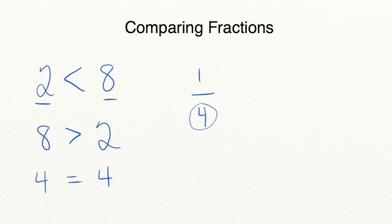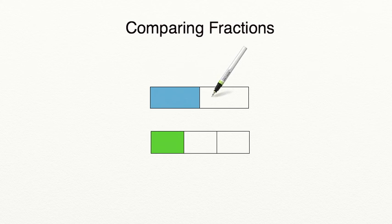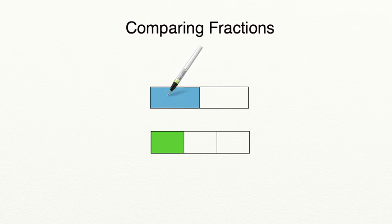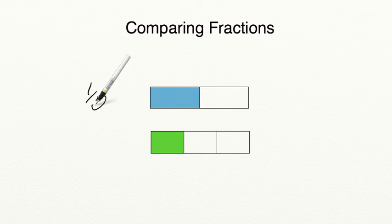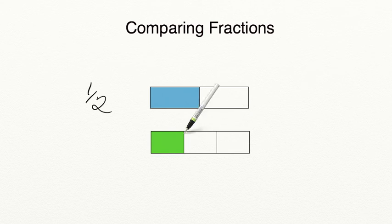Let's start comparing. We'll begin comparing fractions using the two fraction bars on the screen. Our first fraction has two pieces in the whole — that's our denominator — and one of those two pieces is shaded in, giving us a fraction of one-half. Our second fraction has one piece shaded in, but now we have three pieces in the whole, so this fraction represents one-third.